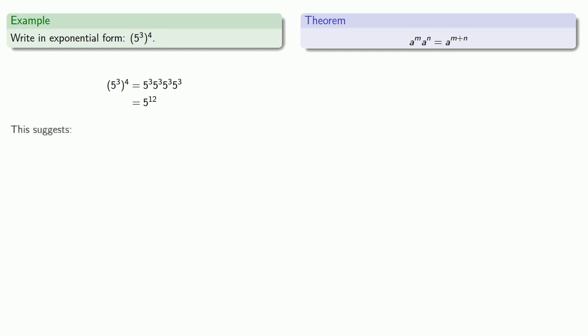This does give us a new useful result if I raise an exponential expression to a power, then because I have n copies of m factors of a, then I'm going to have a total of m times n factors of a.